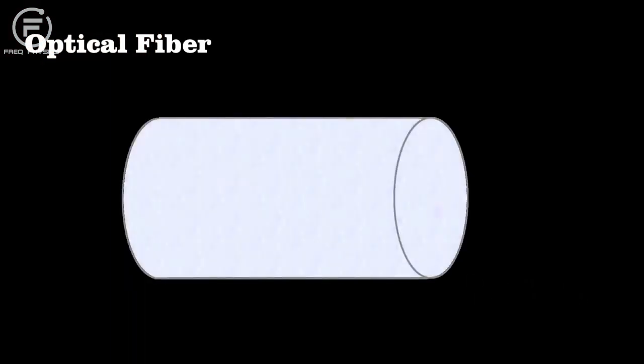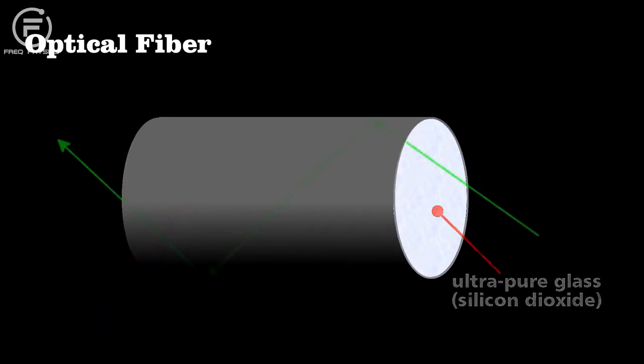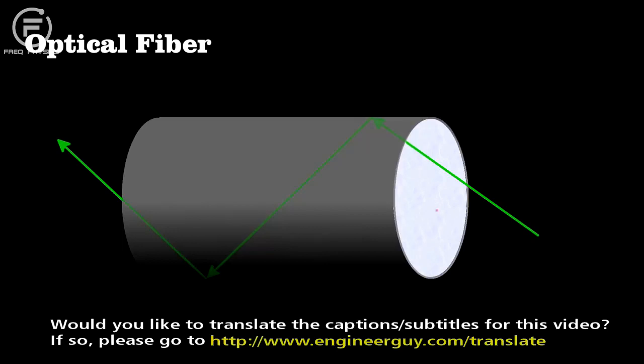engineers create a core of glass, usually pure silicon dioxide, and an outside layer called cladding, which they also typically make from silicon dioxide, but with bits of boron or germanium to decrease its index of refraction. A 1% difference is enough to make a fiber work.